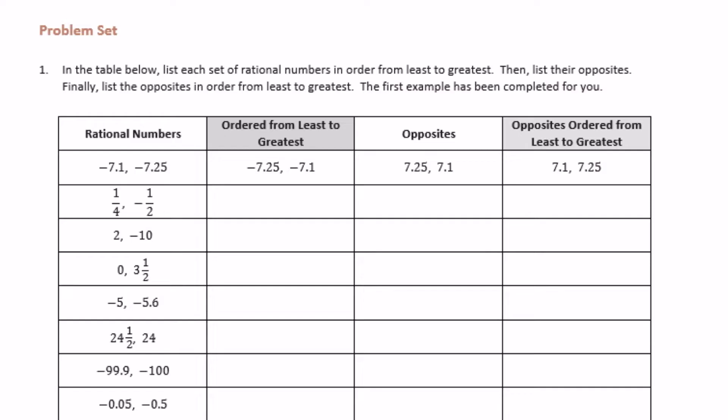6th grade, module 3, lesson 7 problem set. In the table below, list each set of rational numbers in order from least to greatest, then list their opposites. Finally, list the opposites in order from least to greatest.